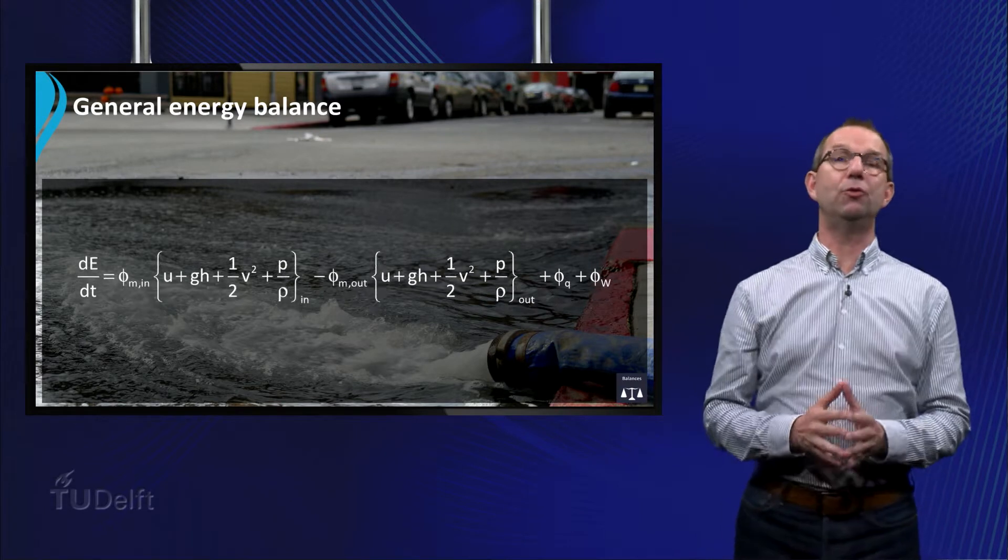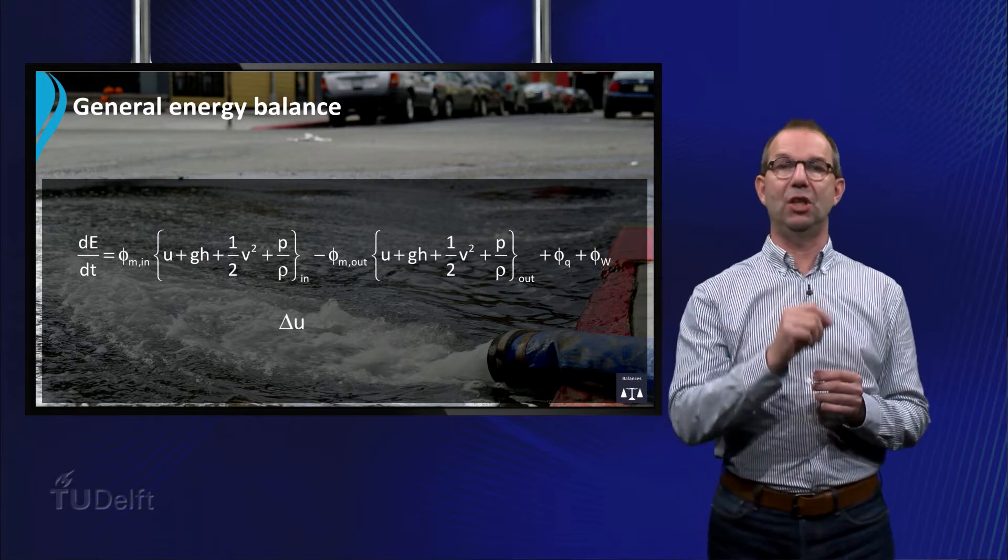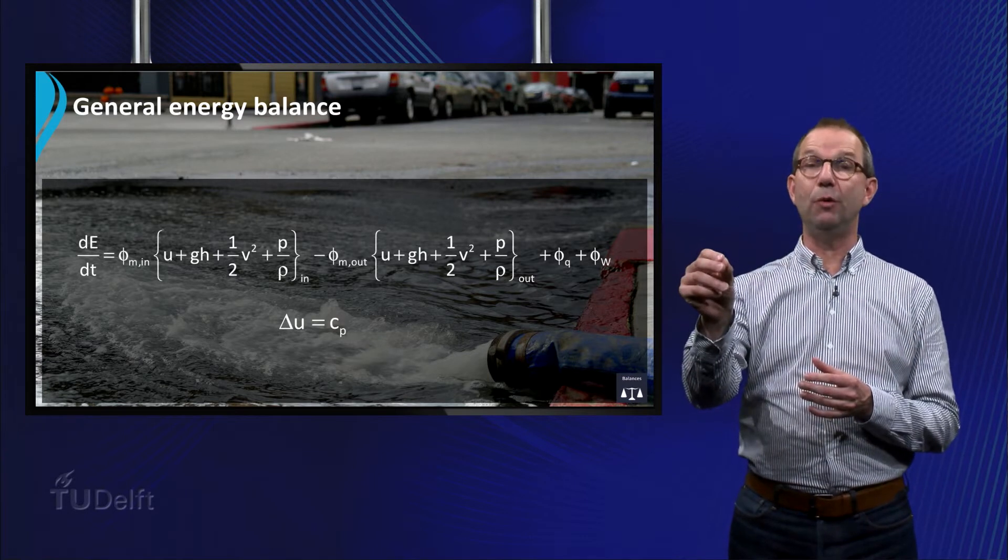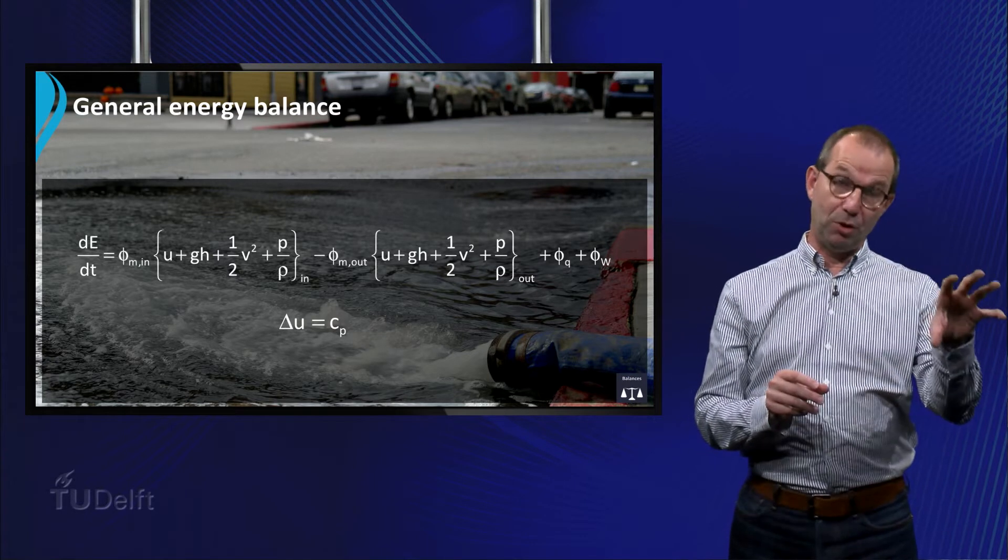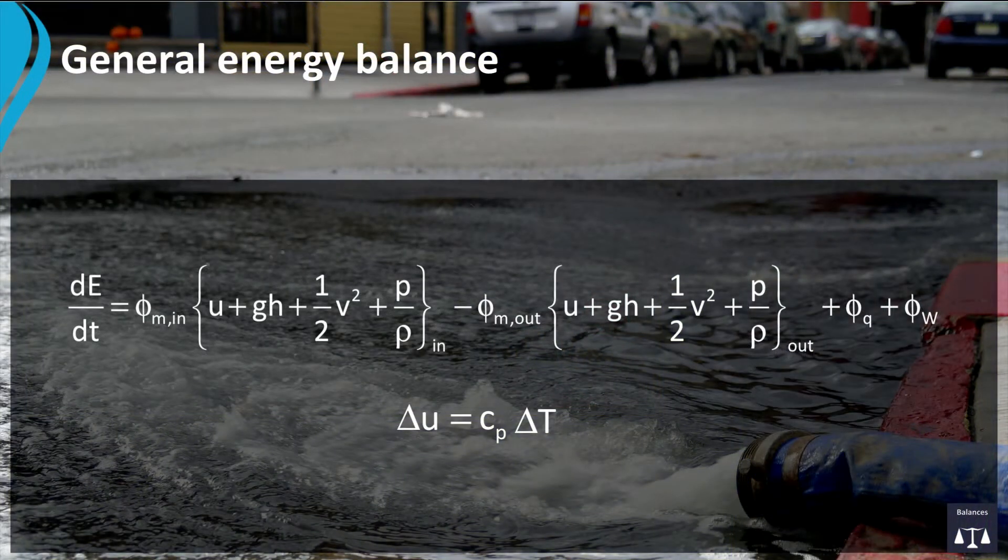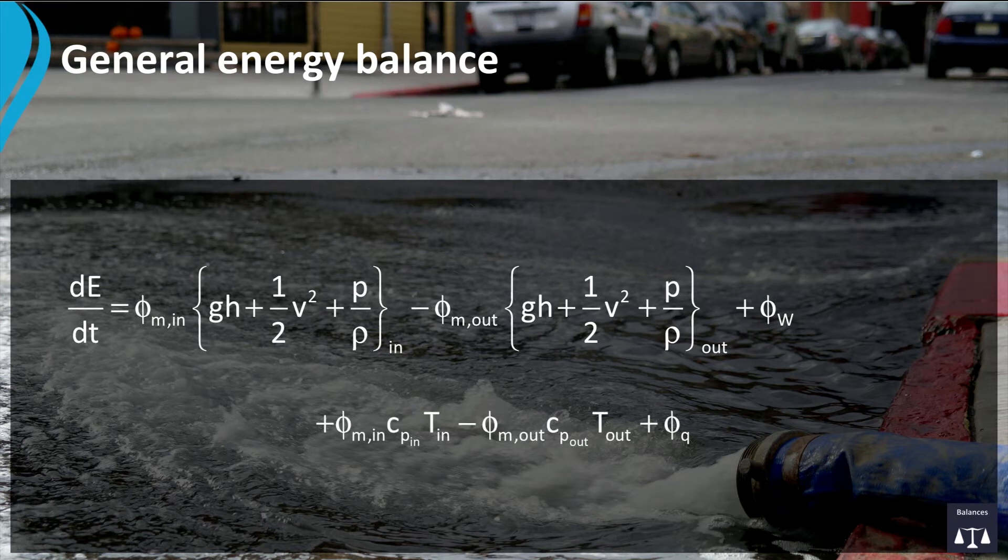Before we introduce these balances, we have to remember that a change in internal energy can be written as the product of the heat capacity of the fluid and the temperature difference. That gives Δu = C_p × Δt. If we substitute the expression of the internal energy u in the energy balance and rearrange the balance in a mechanical and a thermal part, we obtain the following equation.